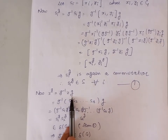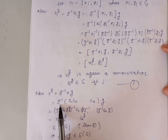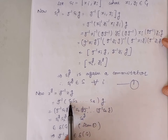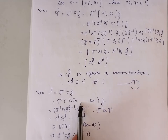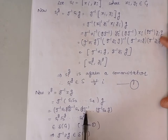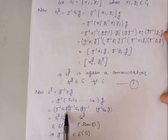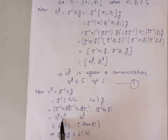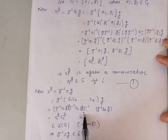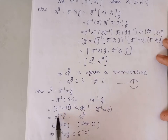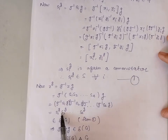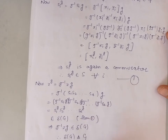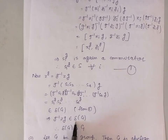Now let us find G⁻¹ZG. Putting the value of Z, this becomes G⁻¹·S1·S2·S3·...·Sr·G. Introducing G⁻¹G between consecutive terms, we obtain (G⁻¹S1G)·(G⁻¹S2G)·...·(G⁻¹SrG), which according to our notation is S1^G · S2^G · ... · Sr^G. Because each of these elements belongs to ΔG, we can say that G⁻¹ZG belongs to the derived subgroup of G.